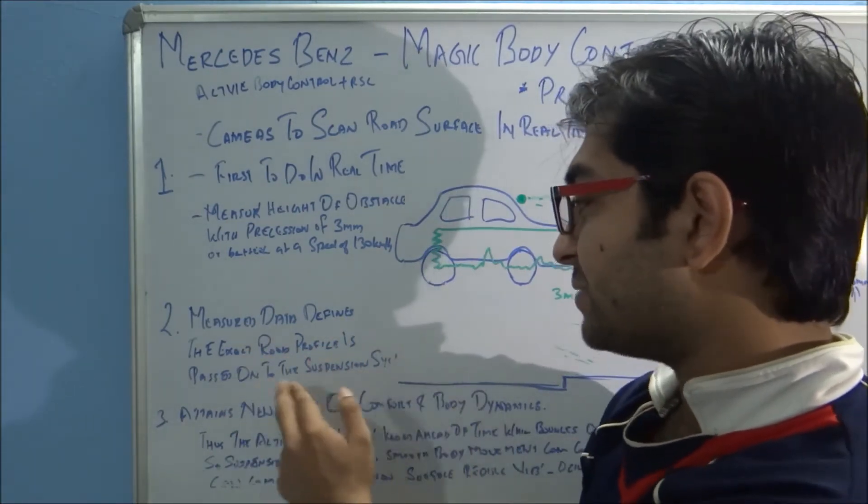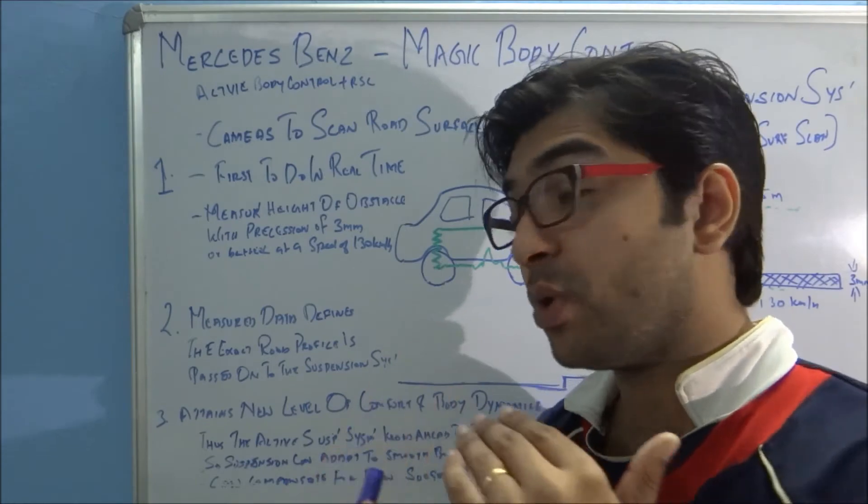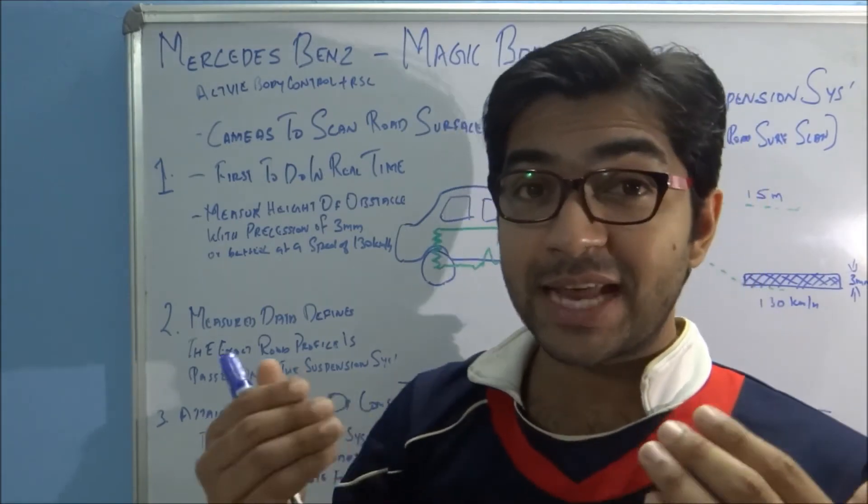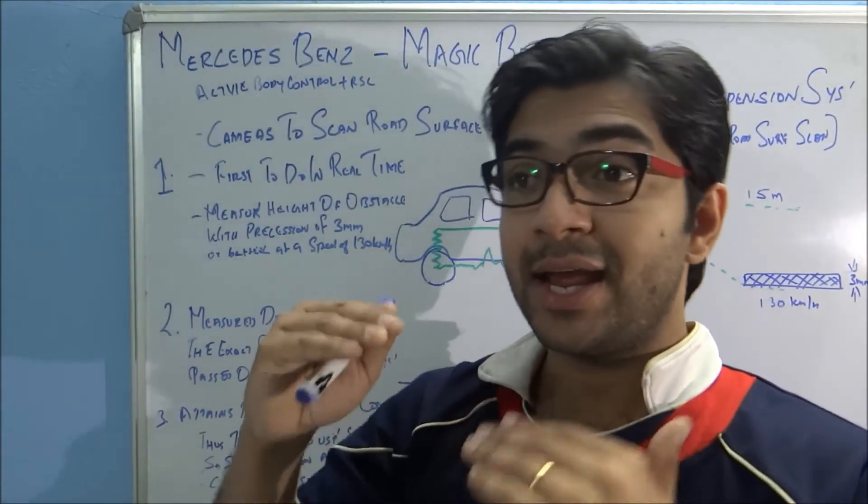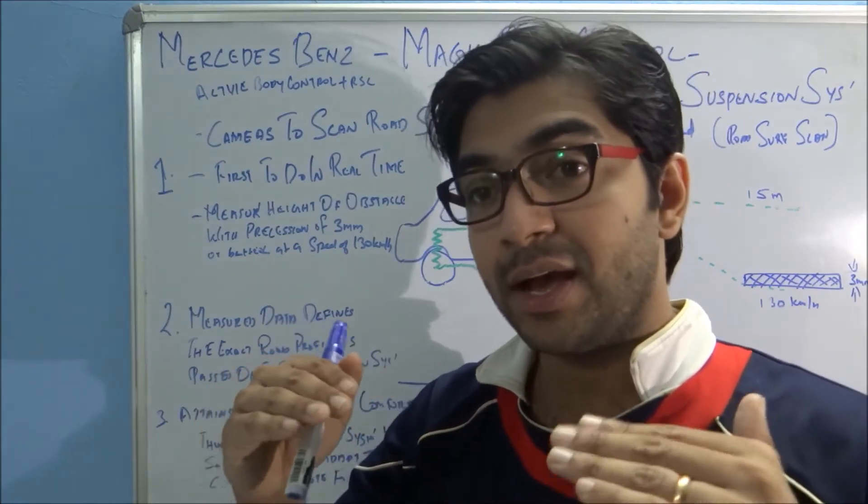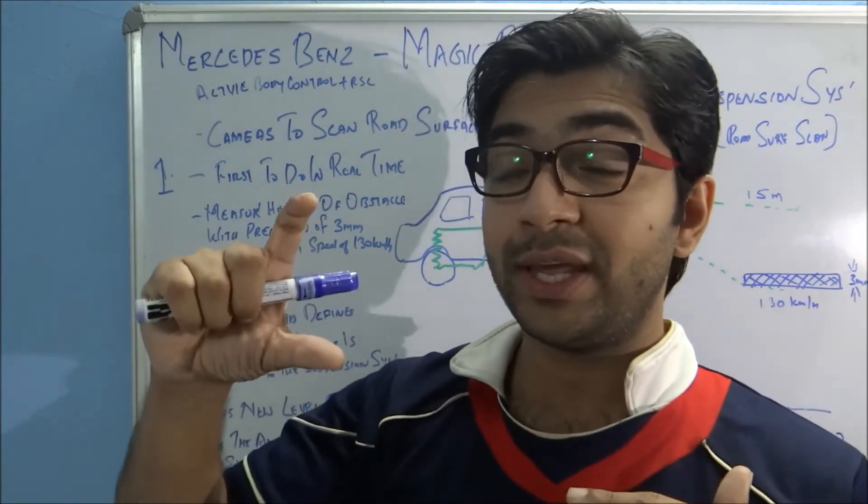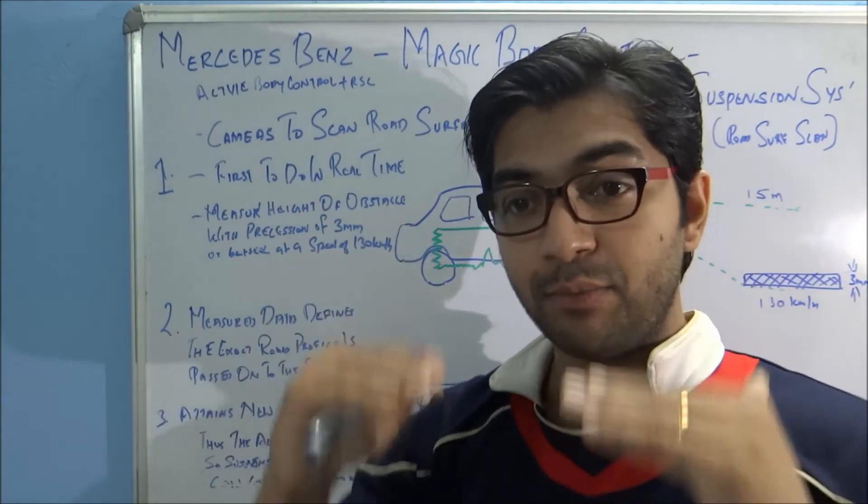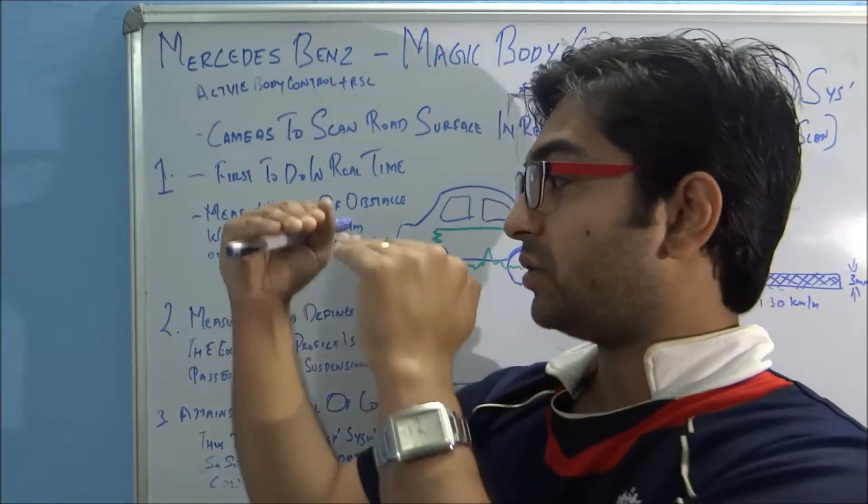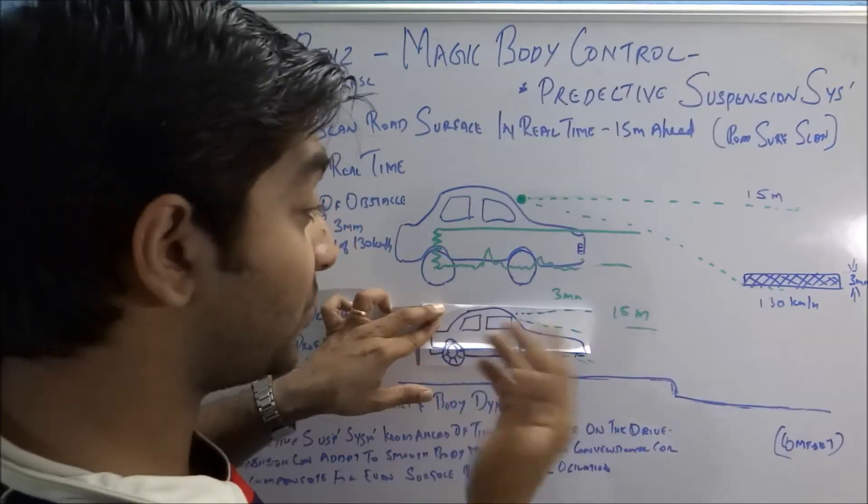This measured data defines the exact road profile and is passed on to the suspension system. This suspension system understands where it has to adjust, where it has to start dancing to adjust the vehicle's movement so that the body can be stabilized and the suspension can move according to the height or the dip. This is actually the magic body control - the suspension moves without the movement of the body on top.